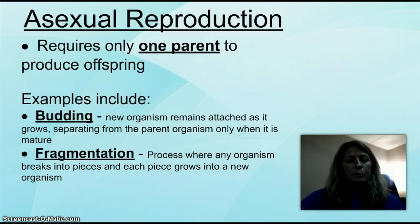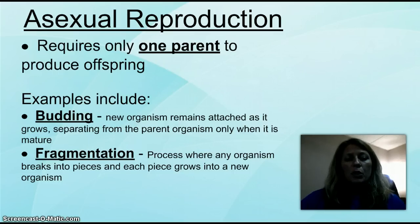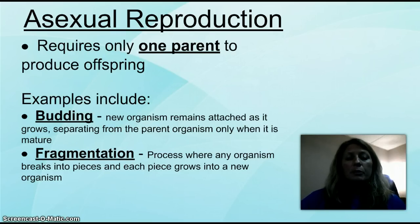Here are some different examples. The first example is budding, and that's where you're going to take the parent organism and it's going to generate a new organism. When it's ready to reproduce, a small bud will form somewhere on the parent organism, and when it reaches maturity it simply falls off and you've developed a new organism. That's budding.